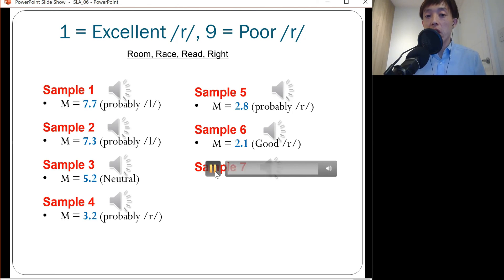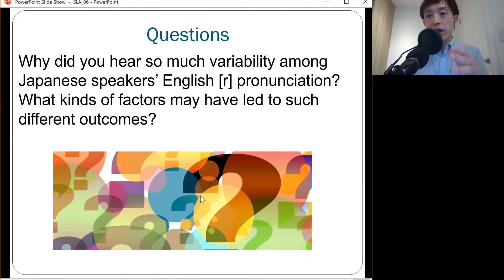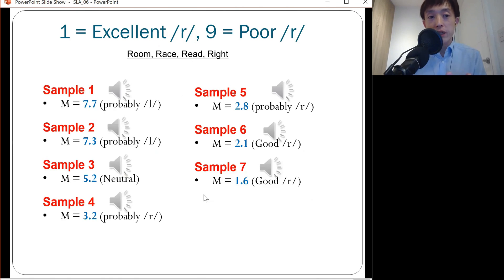Finally, sample 7: 1.6, so good R. Even she showed some kind of Japanese accent while she was pronouncing English R. I would like you to think about why is it that there was difference among the participants' English R pronunciation.